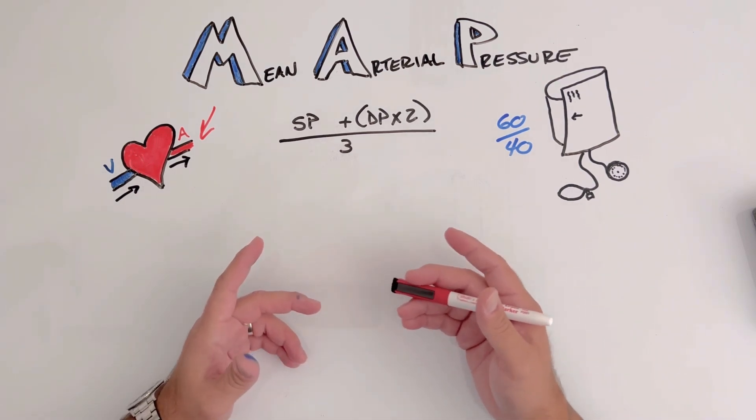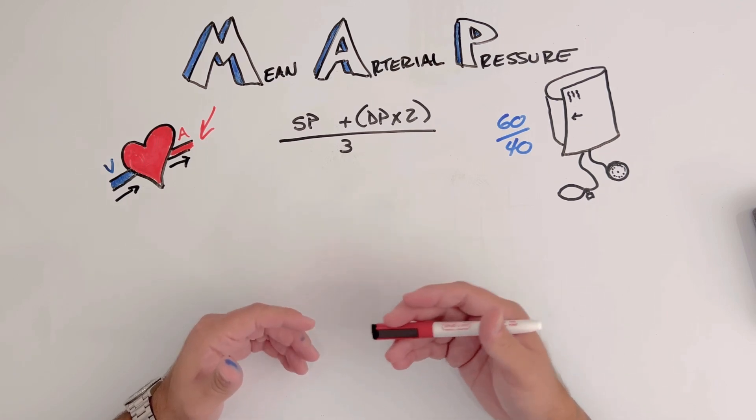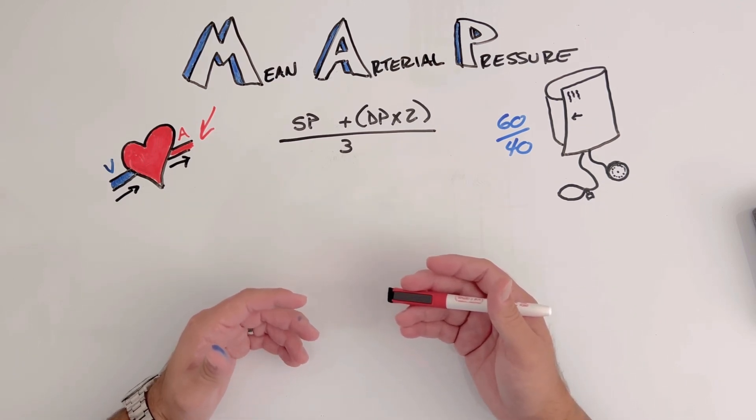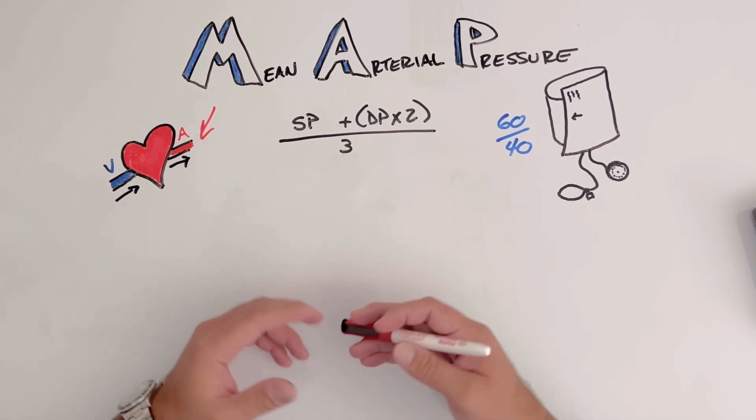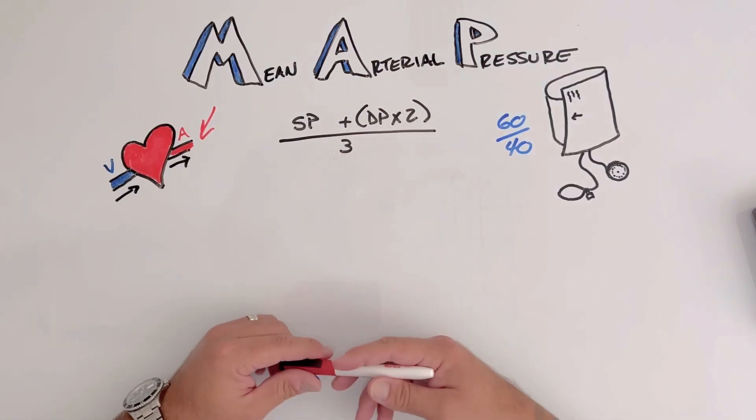Now typically we're using MAP or finding MAP using invasive monitoring techniques, usually in a hospital or specialized equipment. However, just using our NIBP cuff on our monitor or a manual cuff, we can do a quick calculation to identify what our patient's MAP is.